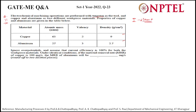The material removal rate (MRR) of copper is given in mg/s. The formula for MRR in grams per second is: MRR = E·I / F, where E is the equivalent weight of the material — that is, molecular weight divided by its valency — I is the current, and F is Faraday's constant.